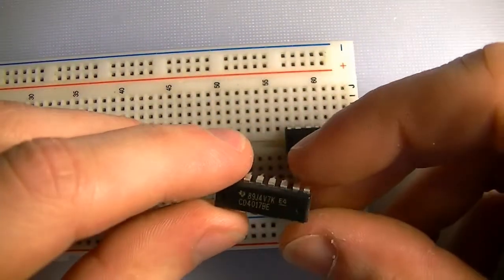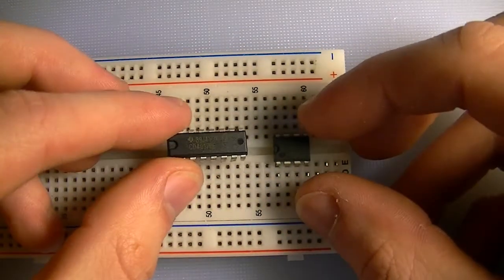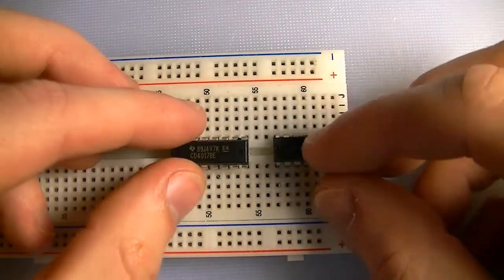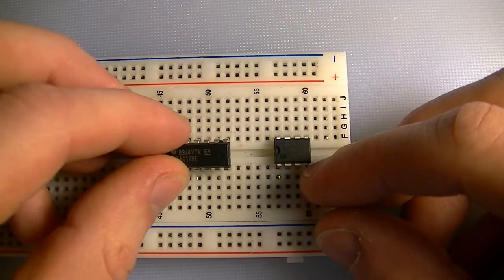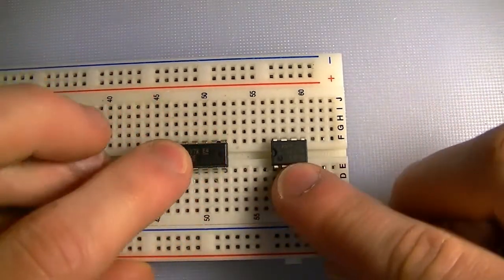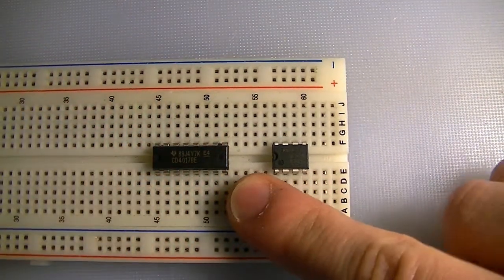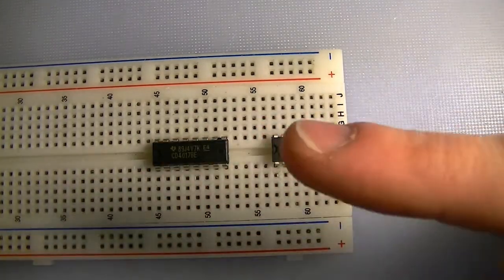Here's my decade counter, the 4017. I'm going to leave four spaces from the 555 timer, and I'm going to put the notch that way.